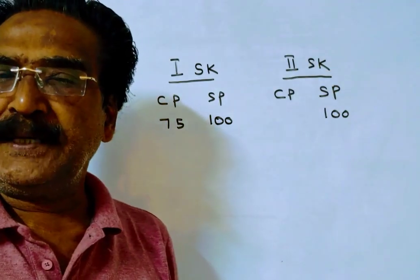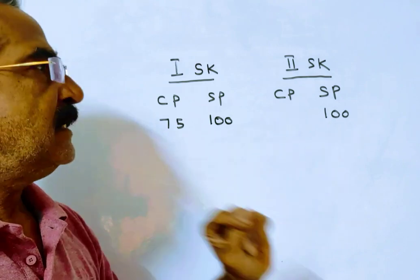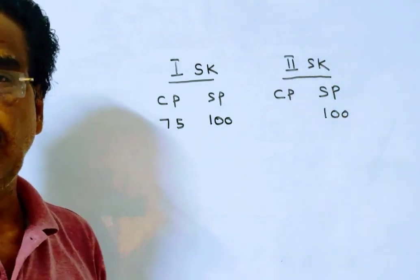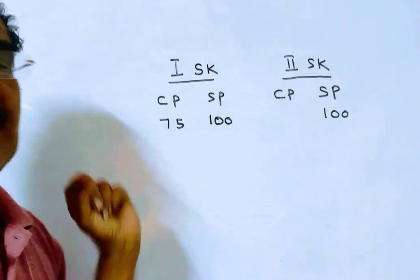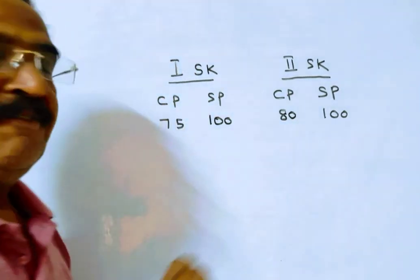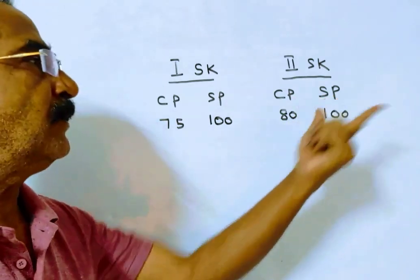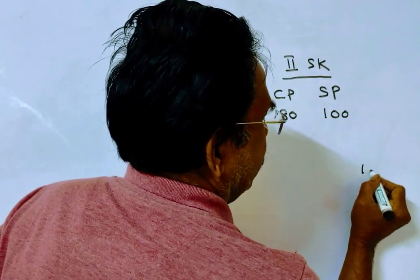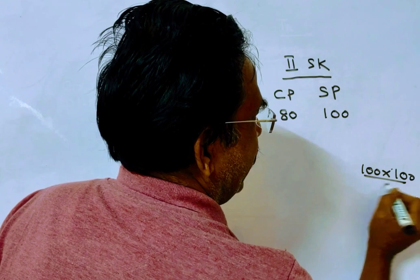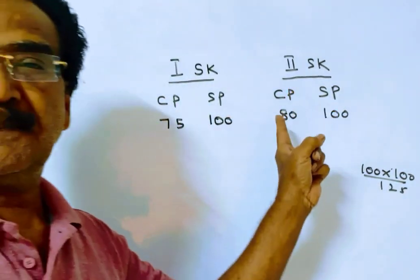Whereas the second shopkeeper calculates his profit on the cost price. If the selling price is 100 and profit percent is 25%, then the cost price becomes 80. Say 80, 25% of 80 means 20, 80 plus 20 is 100. Or you can calculate 100 into selling price by 100 plus profit. This calculation gives us the cost price 80.